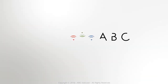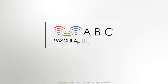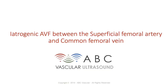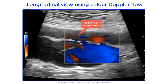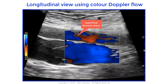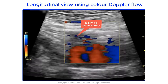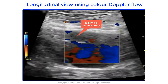Welcome to this ABC Vascular Ultrasound case study on the iatrogenic arteriovenous fistula between the superficial femoral artery and the common femoral vein. In this longitudinal view using color Doppler flow, you can visualize the superficial femoral artery anteriorly to the common femoral vein.